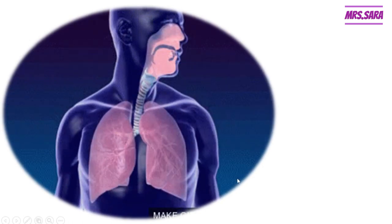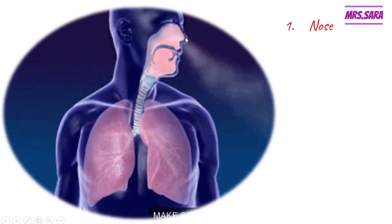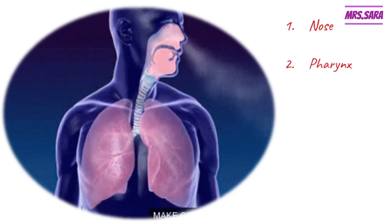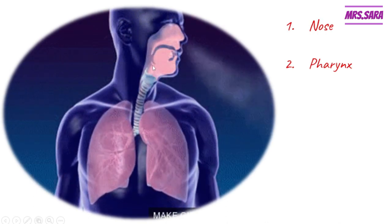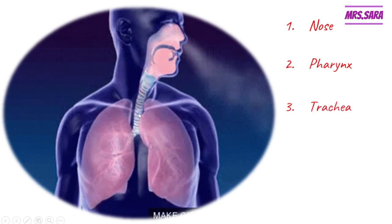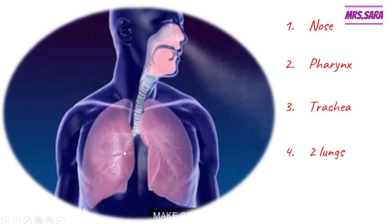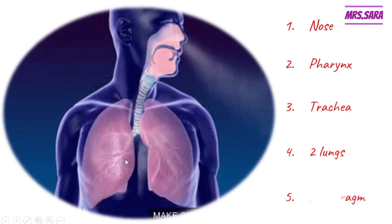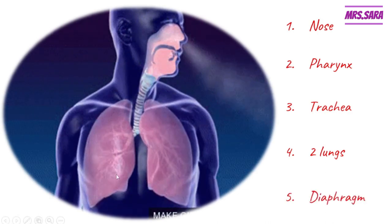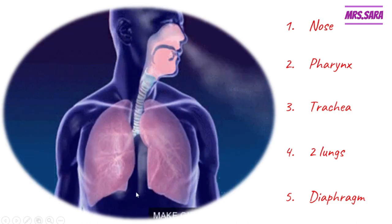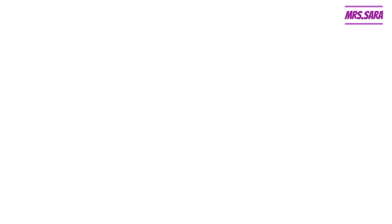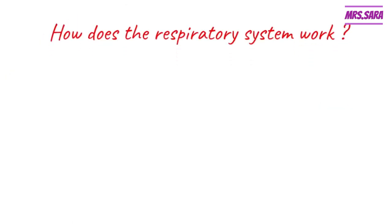The organs of the respiratory system are: the nose, which is the first organ; the pharynx, which we talked about in the digestive system; the trachea, which appears as white rings; the two lungs; and the diaphragm, found at the base of the two lungs.